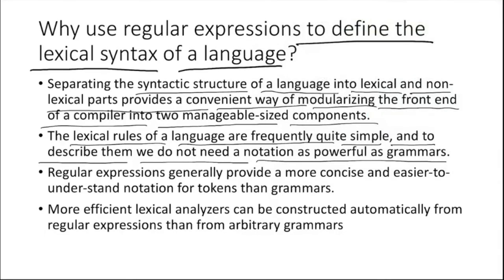The lexical rules of a language are frequently quite simple, and to describe them we do not need a notation as powerful as grammar. So another reason is that the lexical rules are quite simple. It is as simple as, for an identifier, a variable name, we know that it will start with alphabets A to Z or capital A to capital Z, but it should not start with digits. And after this we can have digits 0 to 9 and like that, underscore also. So this is a simple rule. For implementing or for checking this out, we don't need to use the complex and more costly expression like grammar. Instead, regular expressions can do it.